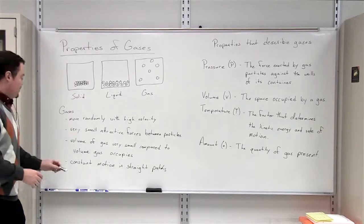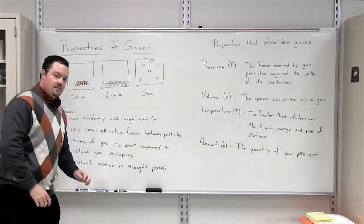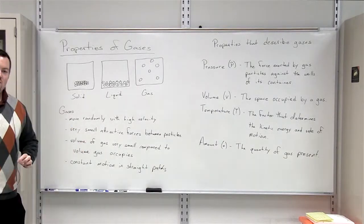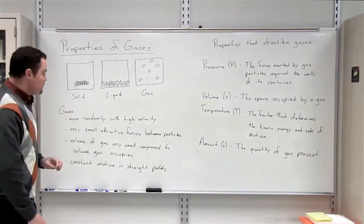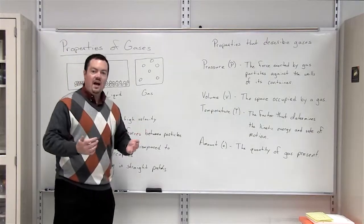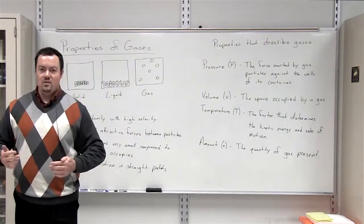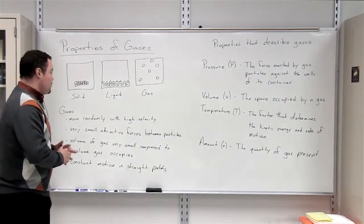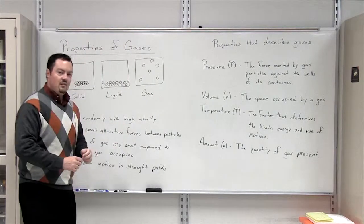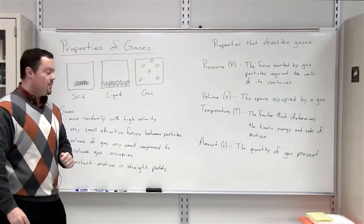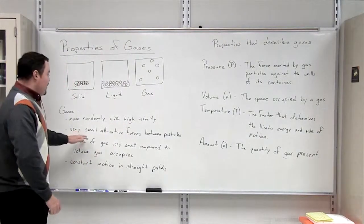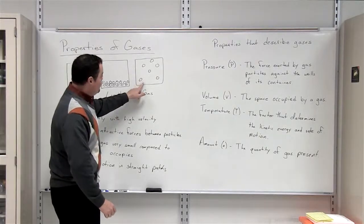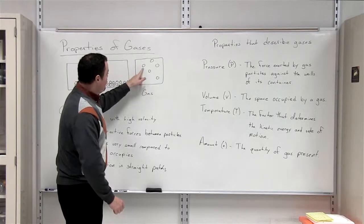Now let's look at some other properties of a gas that differ from that of a liquid or a solid. First of all, gas particles move randomly with high velocity. These gas particles that are out in the atmosphere at room temperature move somewhere around a thousand miles per hour, so they have very high velocities and they're moving in random directions.